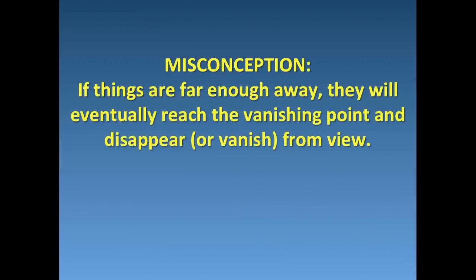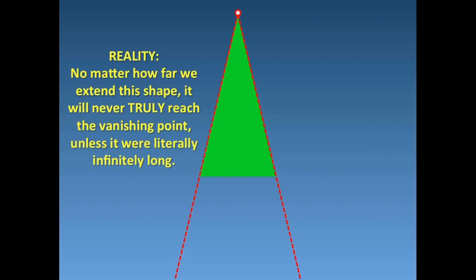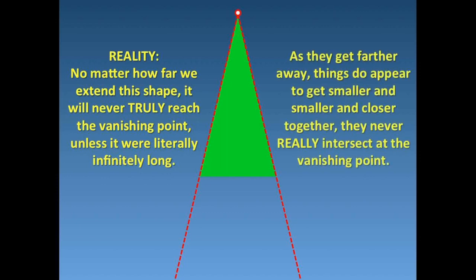Here's a very common misconception. If things are far enough away, they will eventually reach the vanishing point and disappear or vanish from view. The reality is that no matter how far we extend this shape, it will never truly reach the vanishing point unless it were literally infinitely long. As they get farther away, things do appear to get smaller and smaller and closer together, but they never really intersect at the vanishing point. For more on this, see my previous video on perspective.